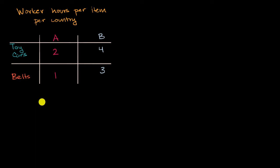In other videos, we have already looked at production possibility curves and output tables in order to calculate opportunity costs of producing a certain product in a certain country, and then we use that to think about comparative advantage.